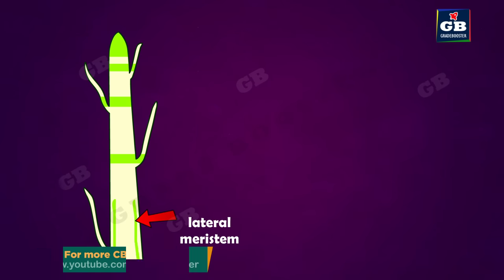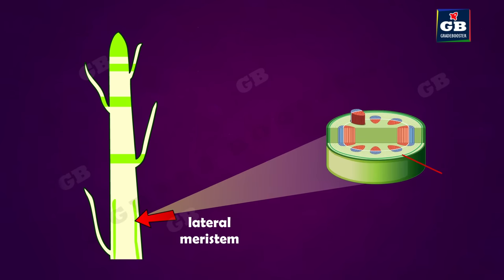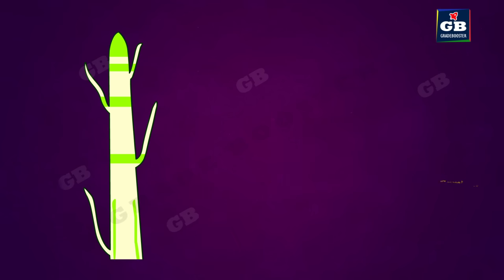Lateral meristem. This meristematic tissue is found in the cork cambium and vascular cambium of plants. This lateral meristem helps the plants to increase their girth.